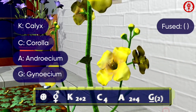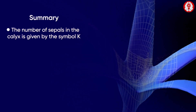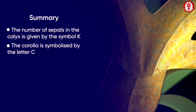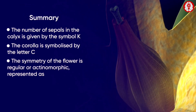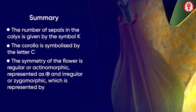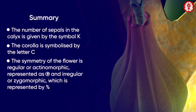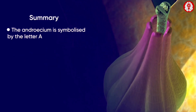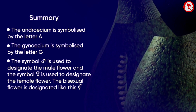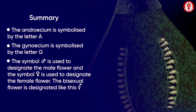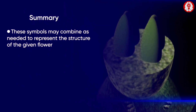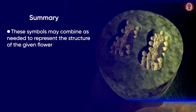To summarize: the number of sepals in the calyx is given by the symbol K; the corolla is symbolized by the letter C; the symmetry of the flower is regular or actinomorphic, or irregular or zygomorphic; the androecium is symbolized by the letter A; the gynaecium is symbolized by the letter G. Symbols for male, female, and bisexual flowers are also used, and these symbols may combine as needed to represent the structure of any given flower.